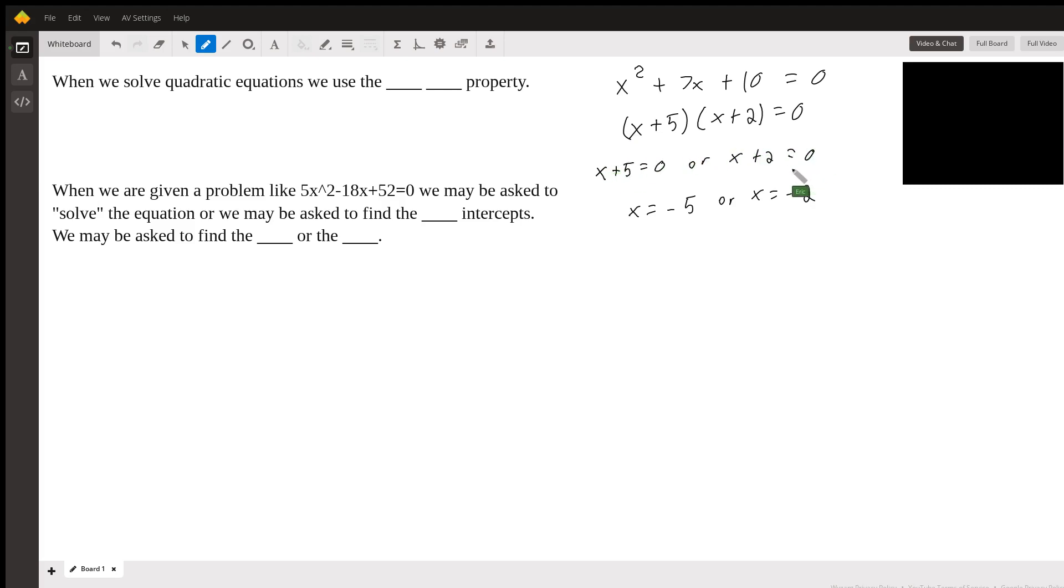Now this is the zero product property. What we just did over here, this is how we get from two terms or two binomials equaling zero and we split it up into two separate parts.